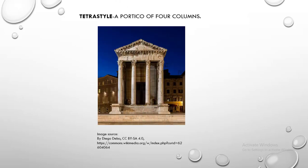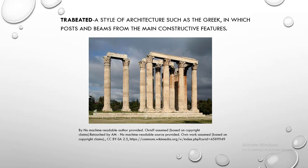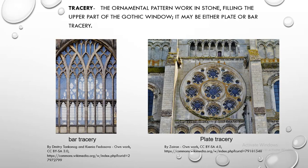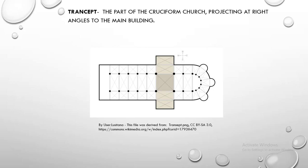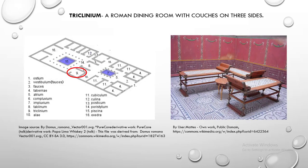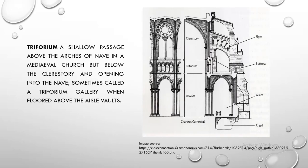Tetrastyle. Tetrastyle is a portico of four columns. Trabeated. Trabeated is a style of architecture such as the Greek, in which posts and beams form the main constructive features. Tracery. Tracery is the ornamental pattern work in stone filling the upper part of a Gothic window; it may be either plate or bar tracery. Transept. Transept is the part of the cruciform church projecting at right angles to the main building. Triclinium. Triclinium is a Roman dining room with couches on three sides. Triforium. Triforium is a shallow passage above the arches of the nave in a medieval church but below the clerestory, opening into the nave; sometimes called a triforium gallery when floored above the aisle vaults.